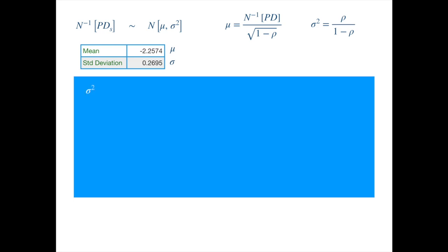Let's first invert the variance formula to get the correlation. Multiplying both sides by the denominator of the fraction on the right-hand side we get, rearranging and factoring rho we get. Isolating rho on one side, we get correlation in terms of the variance.